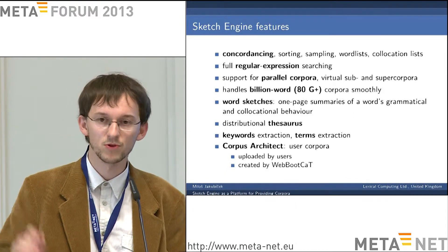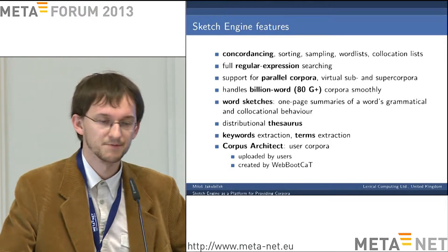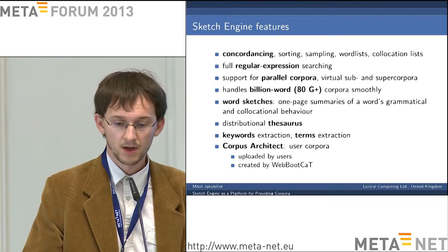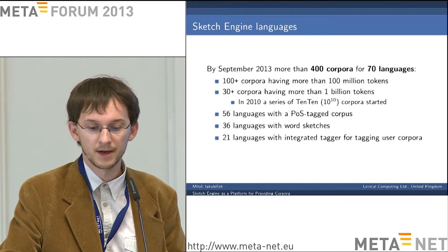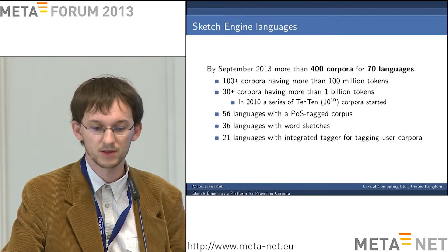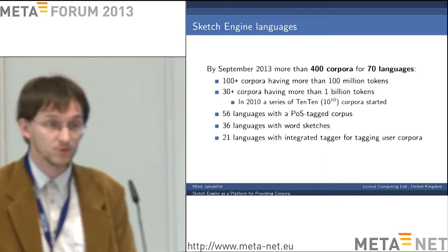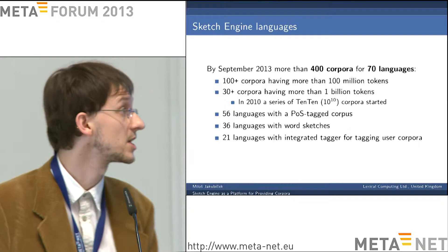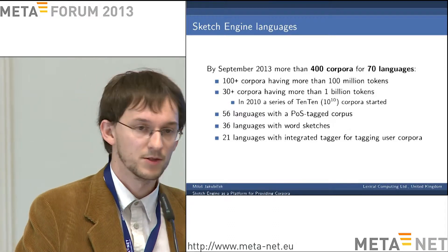We are also able to build distributional thesauri out of the word sketches, and there are many other features. We enable our users to upload their own corpora and build them in the system, so it's a really complex and full setup for dealing with text corpora. By now, we have over 400 corpora for 70 languages in the system. More than 100 of them have over 100 million tokens, and more than 30 have over 1 billion tokens. Three years ago, we started building the so-called 10-to-the-10 corpora — 10 billion word corpora — aiming to have them for as many languages as possible. We started with the 10 languages that have the most speakers and are continuing with others now.